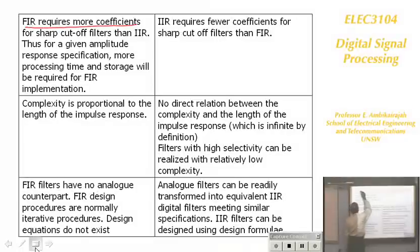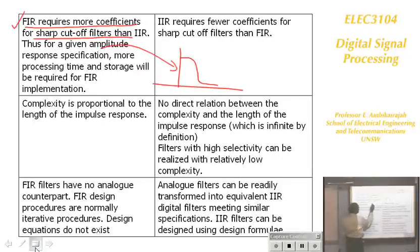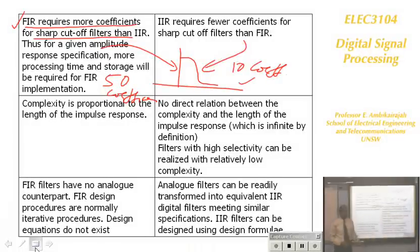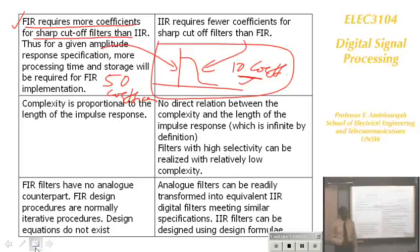One major problem with FIR filter is that it requires more coefficients for a sharp cut-off filter than an IIR filter. For example, if you design using an FIR filter, you may need 50 coefficients. The same filter with an IIR could need only 10 coefficients. Therefore, if linear phase is not important in your filtering process, always go for the IIR filter — you need fewer coefficients. That's one of the attractive properties of the IIR filter.